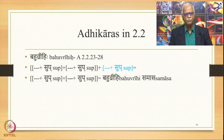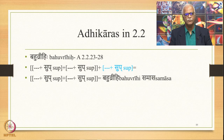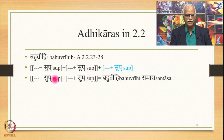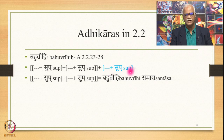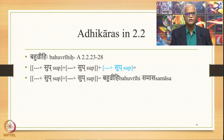Then we go to 2.2. The important Adhikara is Bahuvrihi, where the Bahuvrihi compound is stated from 2.2.23 to 2.2.28. The important point here is that there are two Supas getting compounded, and there is one more word with Sup outside the compound. This non-compounded word outside the compound becomes prominent — it becomes a qualifier. Such a compound is called Bahuvrihi.